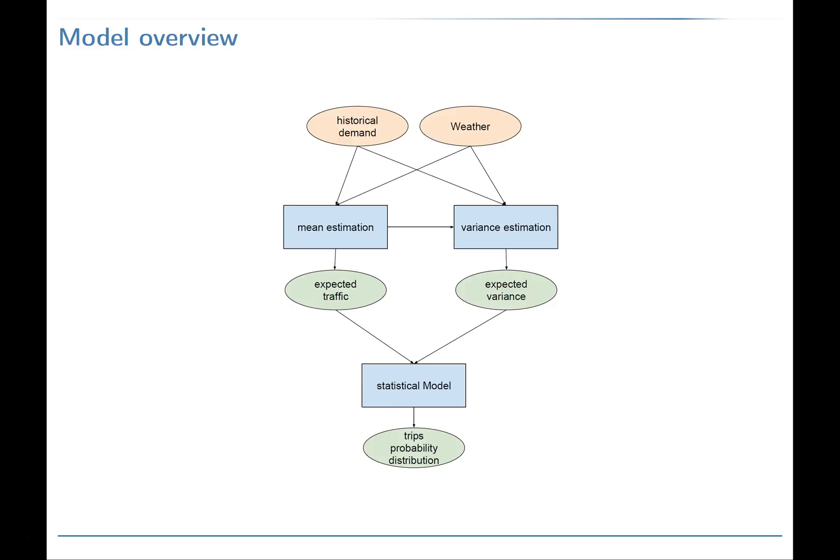From historical demand and weather features, the traffic mean and variance are estimated for each one of the stations. Our model uses dimensionality reduction to minimize the problem complexity. The original problem has to estimate 1080 variables, which is the number of rentals and departures at each one of the 540 stations. Our solution approach was able to effectively reduce the complexity of the prediction problem, reducing computing times and memory requirements, while increasing prediction accuracy.